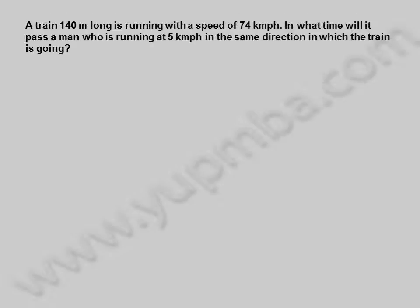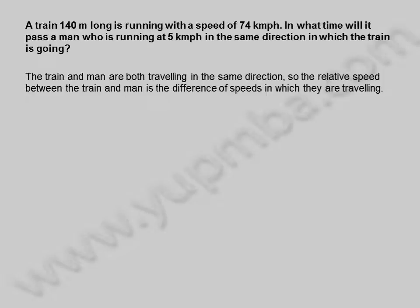A train 140 meters long is running with a speed of 74 kilometers per hour. In what time will it pass a man who is running at 5 kilometers per hour in the same direction in which the train is going? The train and man are both traveling in the same direction, so the relative speed between the train and man is the difference of speeds in which they are traveling.